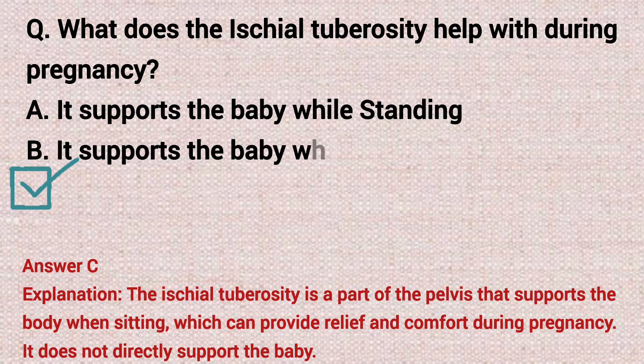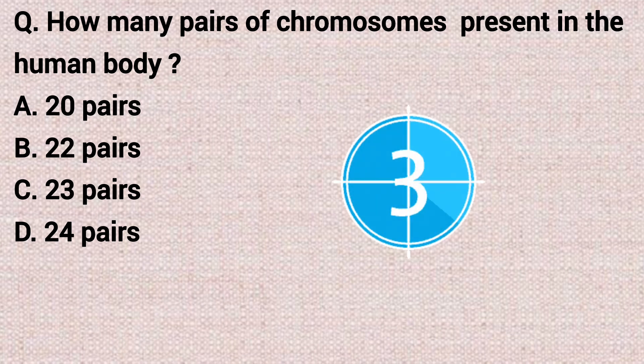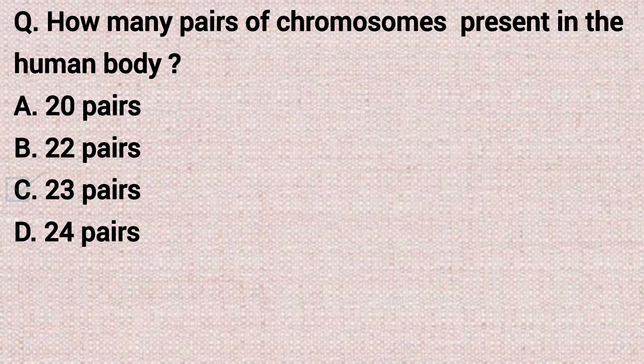The next question: how many pairs of chromosomes are present in the human body? Option A: 20 pairs. Option B: 22 pairs. Option C: 23 pairs. Option D: 24 pairs. The correct answer is option C, 23 pairs.